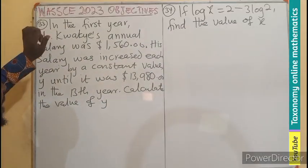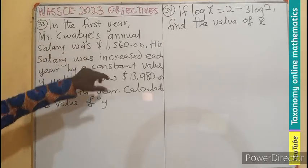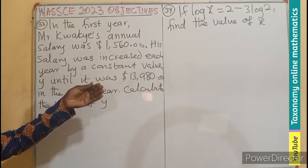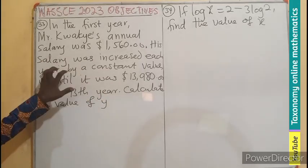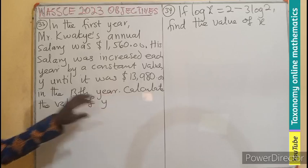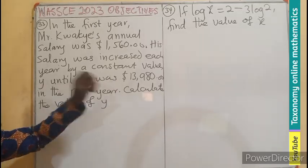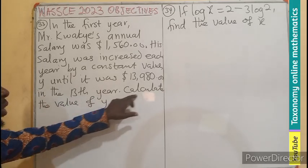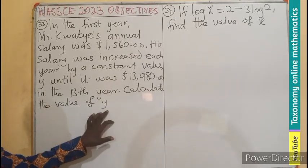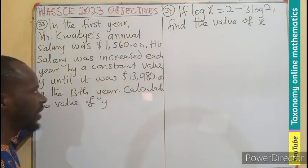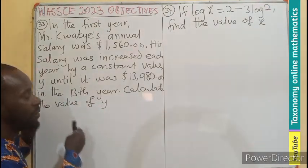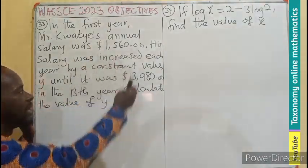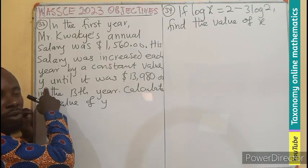Question 33. In the first year, Mr. Kwadjo's annual salary was $1,560. His salary was increased each year by a constant value of y until it was $13,980 in the 30th year. So calculate the value of y. If you read the question carefully, you will see that if we are beginning from this year, this is going to be the first salary. Every year, there will be y amount of dollars added to this.